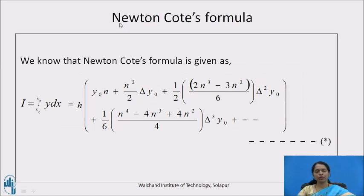For using this trapezoidal rule, we have to use first Newton-Cotes formula. This is the basic parent formula, which is stated as integration x naught to x_n y dx is equal to h times in bracket y naught times n plus n square by 2 times delta y naught plus half times bracket 2n cube minus 3n square upon 6 times delta square y naught plus one by 6 times n raise to 4 minus 4n cube plus 4n square whole divided by 4 times delta cube y naught plus and so on. Let us call this Newton-Cotes formula as formula star.